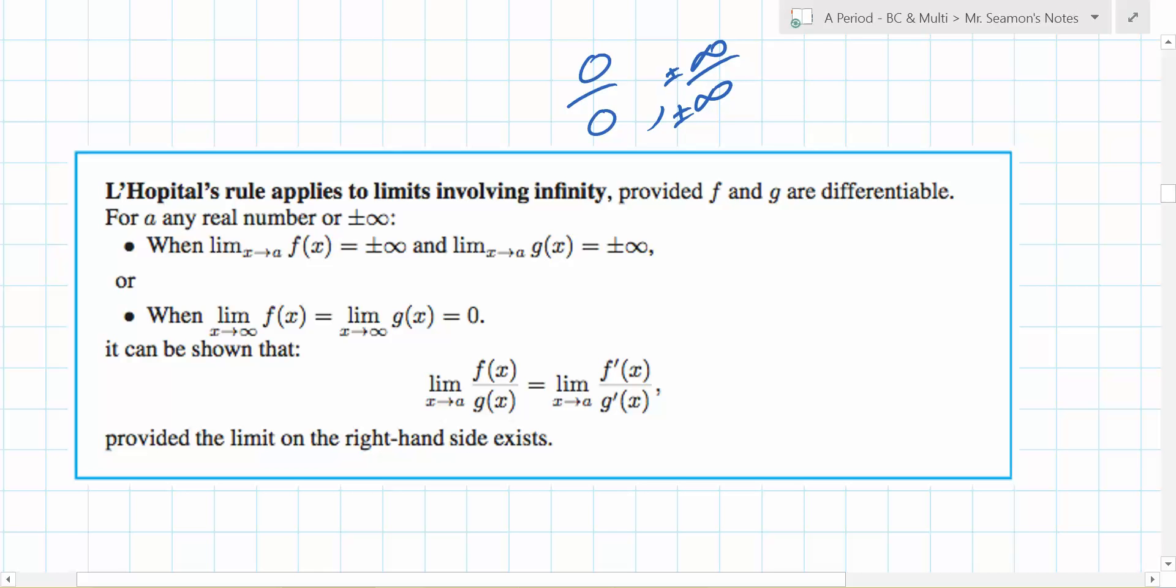If you have a quotient and these other things are met, you can take the derivative of just the top and put it over the derivative of just the bottom and do that one. This is not equal to this, but the limit is.